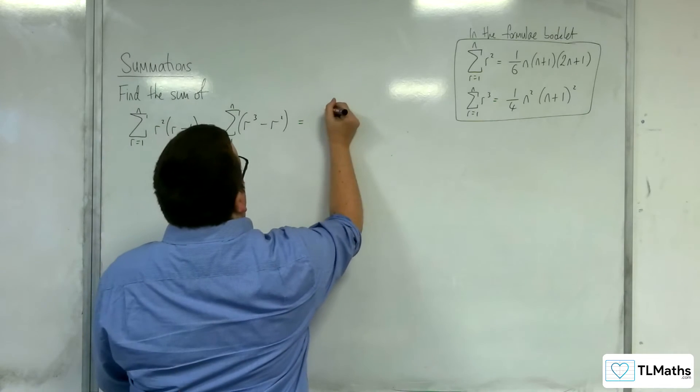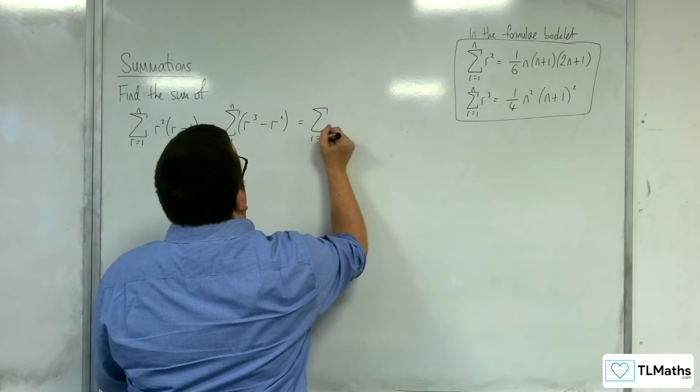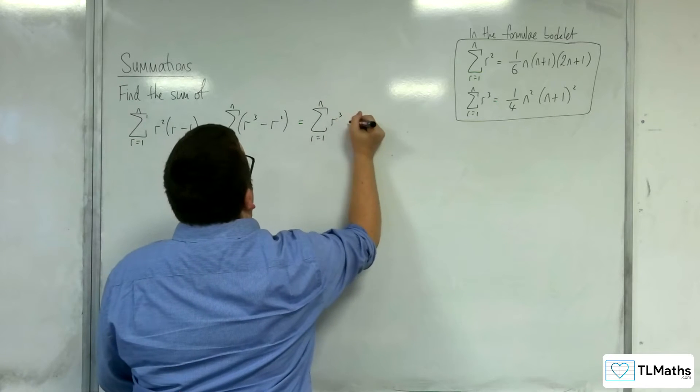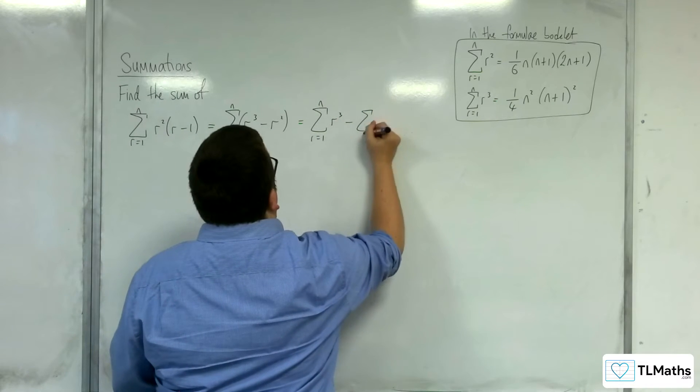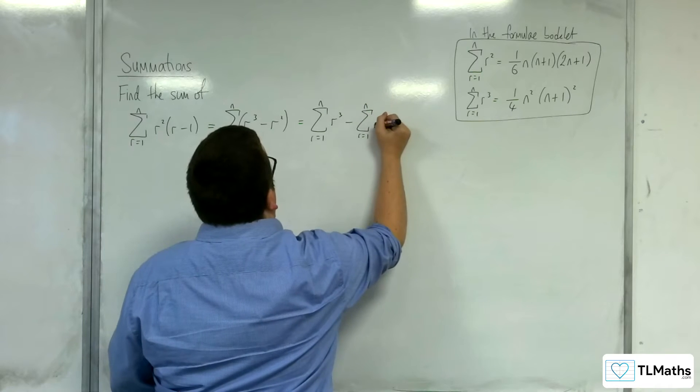Then we can split it into the sum from r is 1 to n of r cubed, take away the sum from r is 1 to n of r squared.